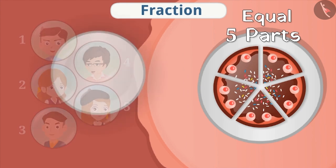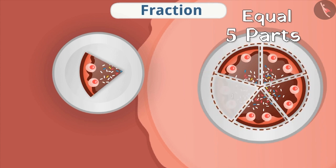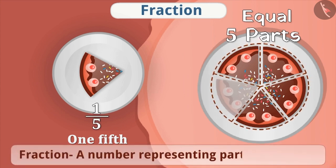After distribution, Manav kept one piece aside. As it is one of the five equal parts, it can be represented like this and read as one by five or one-fifth. A number which represents the part of a whole is called a fraction.